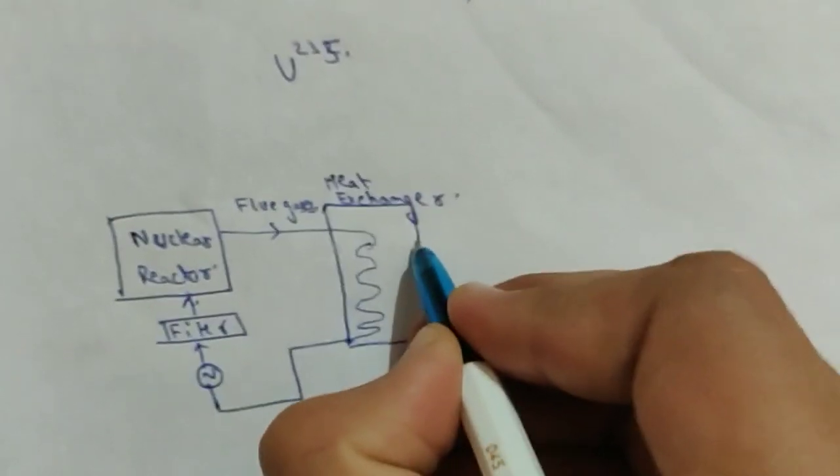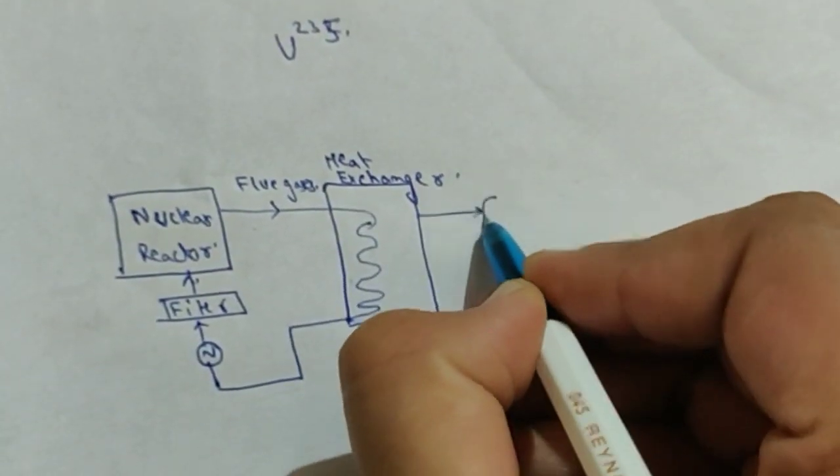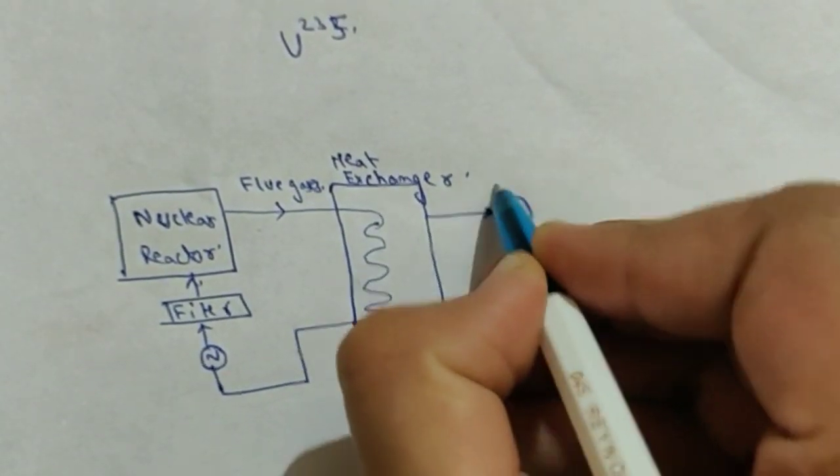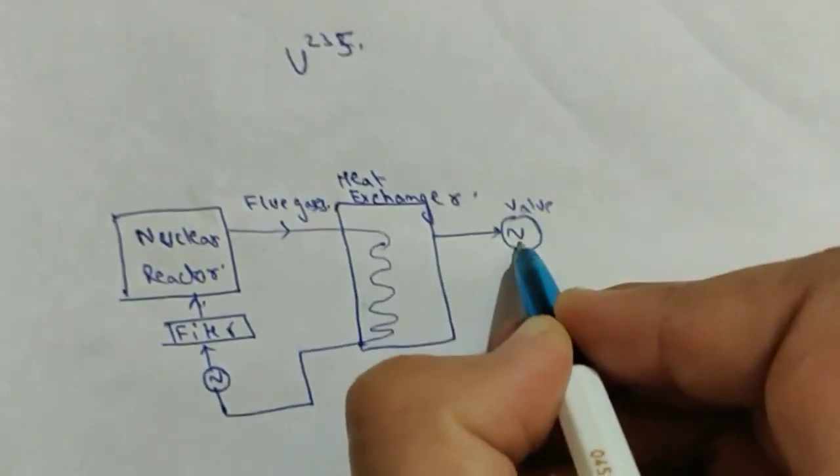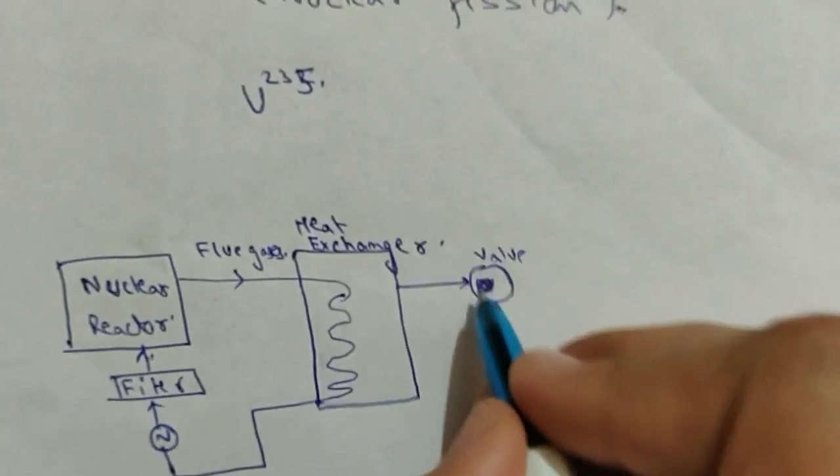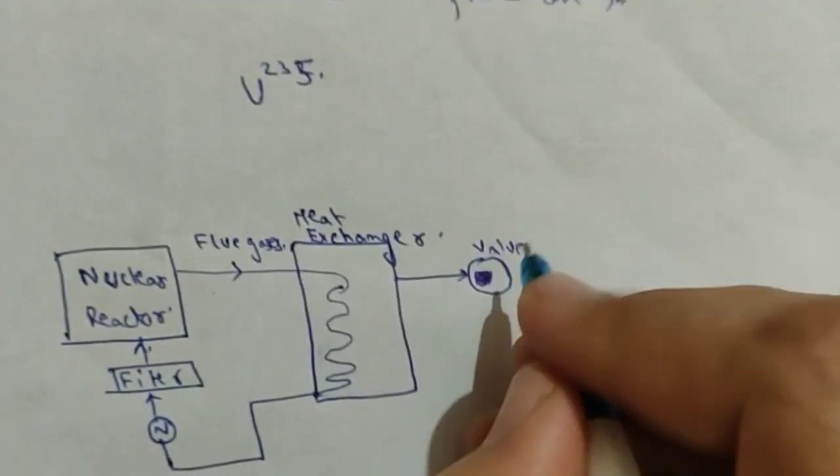From here, this heat exchanger produces steam. We have a safety valve here. Sorry, don't use the symbol, symbol it is used for AC. Don't use the symbol, just a circle.